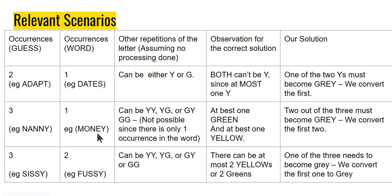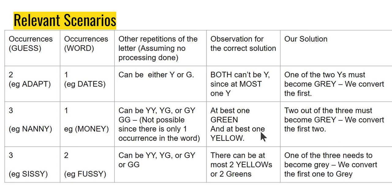Similarly, let's say I have three N's in the guess and one in the chosen word. Without processing, I might see yellow, green, yellow — for example, the second N is green and the third is yellow. But there's only one N in the chosen word, meaning I can have at best one green and at best one yellow — I cannot have both a green and a yellow together. So two out of these three must become gray. We convert the first two to gray. If the first two were yellow and the third was green, making the first two gray is correct. If all three were yellow, I convert the first two to gray and end up with one yellow — exactly what's needed.